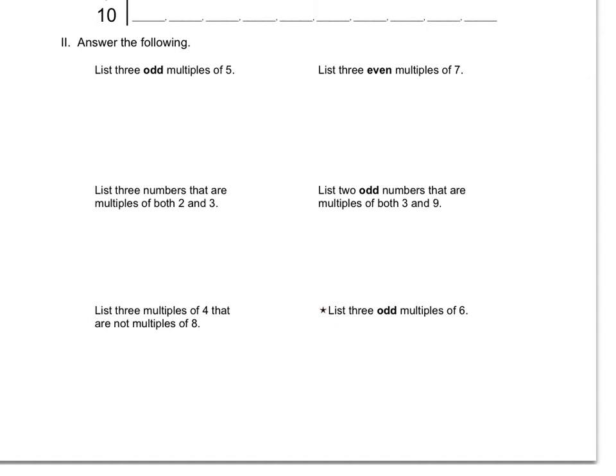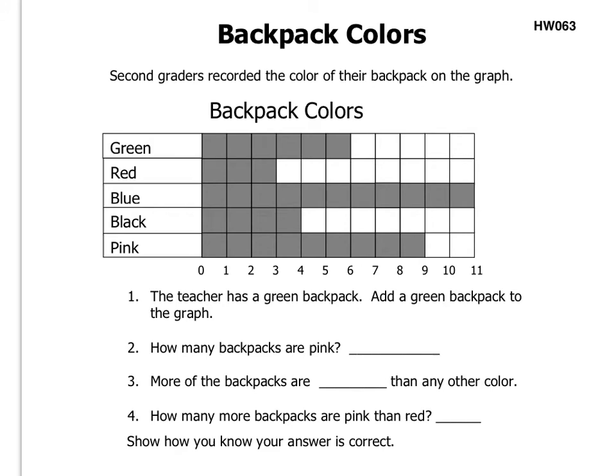Okay, we're moving on to the other side. Here we are on the back side. Backpack colors. Second graders recorded the color of their backpack on the graph. Okay, so you got green, red, blue, black, and pink. And you can see how many green backpacks there were. Looks like 6. Red was 3, blue was 11, black was 4, and pink was 9.